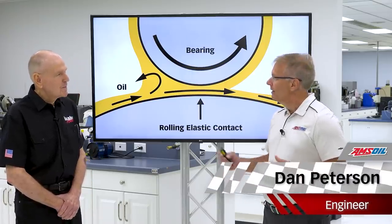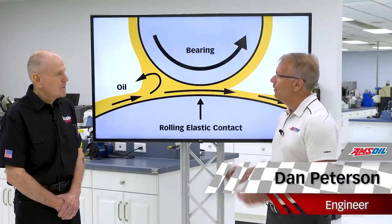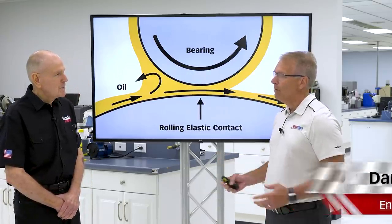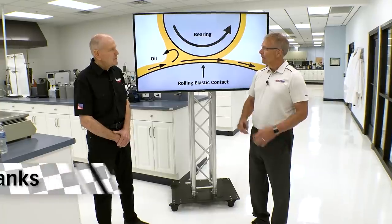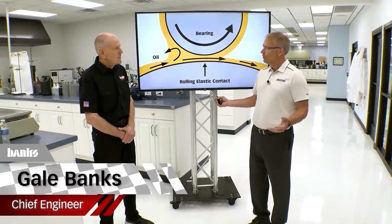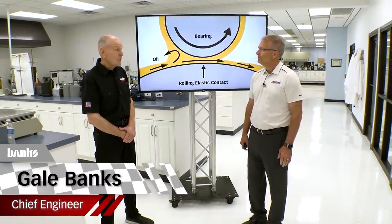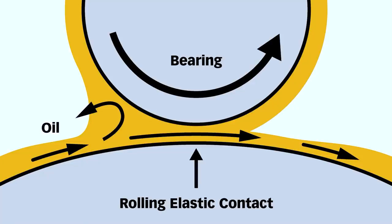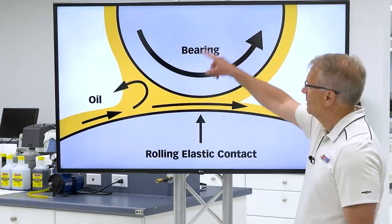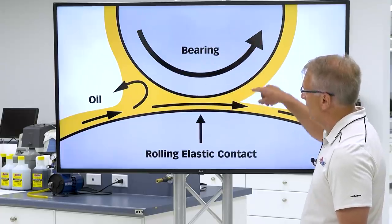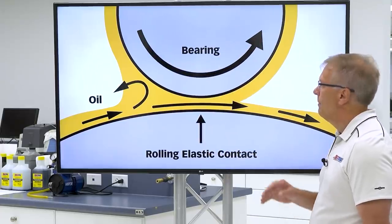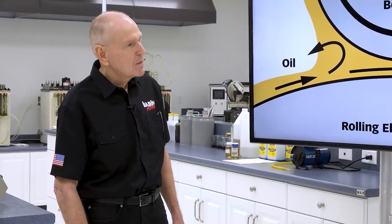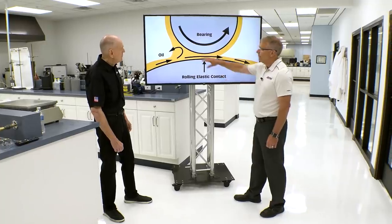Before we get started, I'd like to take your viewers through some foundations of how a motor oil is put together — the components and how they work. This picture represents what a lot of people probably understand: you've got a rolling shaft here, and then you've got a bearing surface.